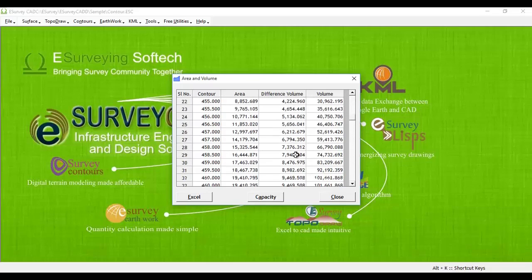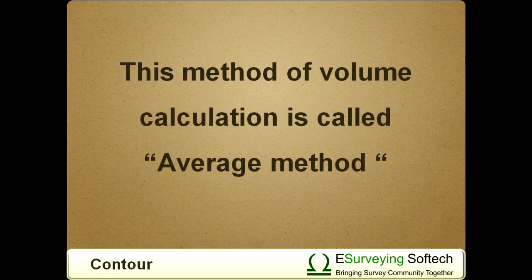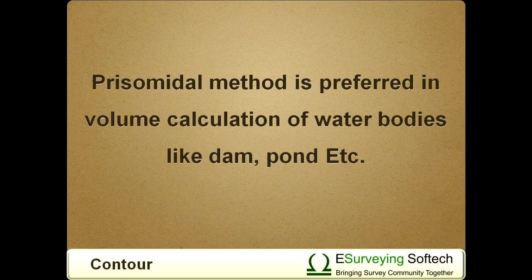Further, it will also generate the cumulative volume. This method of volume calculation is called the average method, and the prismoidal method is preferred in volume calculation of water bodies like dams, ponds, etc.